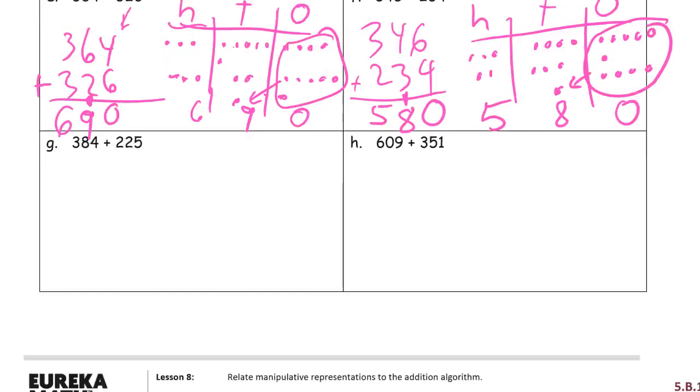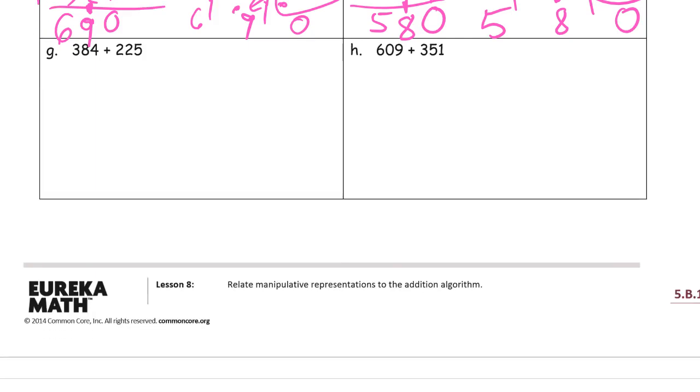I have 580 for both of them. 384 is 3 hundreds, 8 tens, make sure that looks more like a chip. That's 380. Now I need 4 more ones.